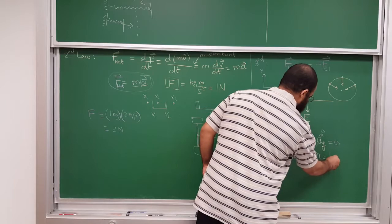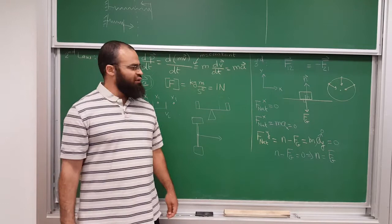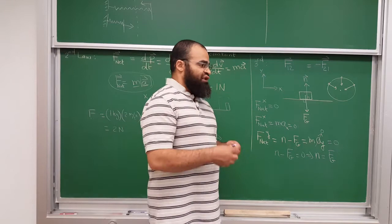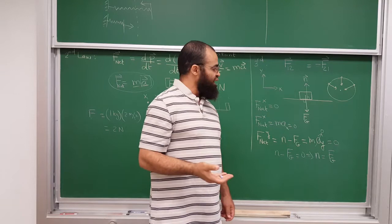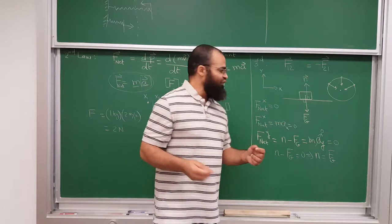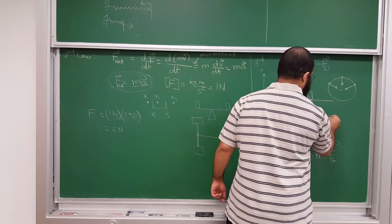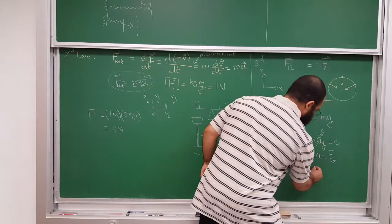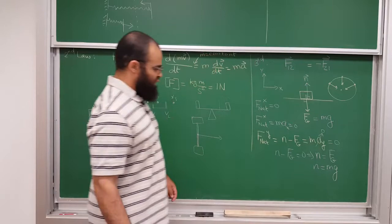How much is the force of gravity on an object? If I let it fall, it falls with the acceleration due to gravity g. So the force of gravity is just the mass of the object times g: Fg = mg. In this case, if the object is resting on the table, then the normal force equals mg. That's the free body diagram result.